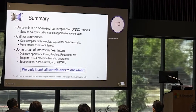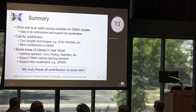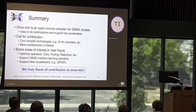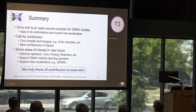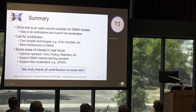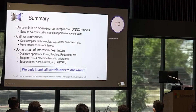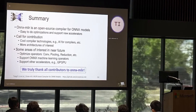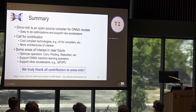In summary, we believe the ONNX-MLIR compiler is convenient for doing optimization and supporting new accelerators. As an open-source project, we would like contributions from the community to help it grow. In the near future, we will continue to optimize important operators like convolution, pooling, reduction, et cetera, and we will also support ONNX machine learning operators. Currently we are focusing on deep learning operators, but there is still a lot of work to do for ONNX machine learning operators.